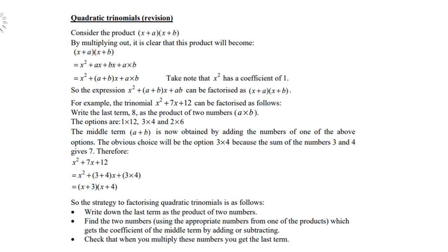And of course, ax + bx can be factorized, and you take out x as a common factor, and you get (a + b)x. Now take note that x² has a coefficient of 1. So the expression x² + (a + b)x + ab can be factorized as (x + a)(x + b).